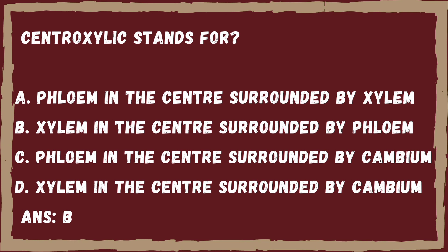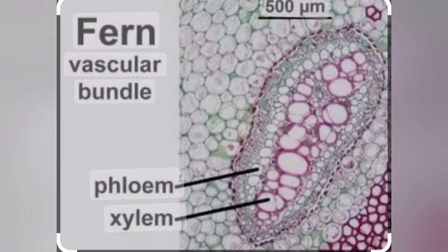The right answer is Option B, that is xylem in the center surrounded by phloem. The main example of a centrosylic vascular bundle is male fern. As you can see in the picture, xylem is in the center and it is surrounded by phloem.